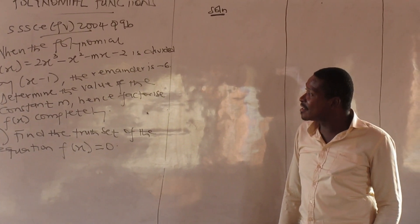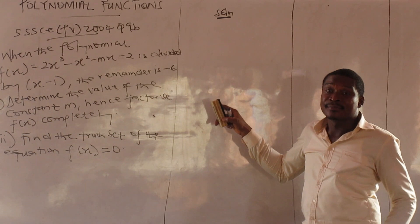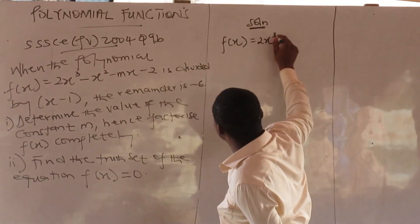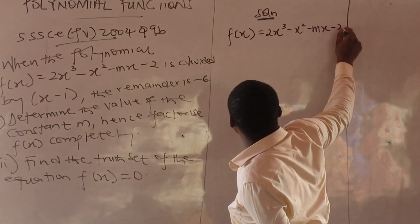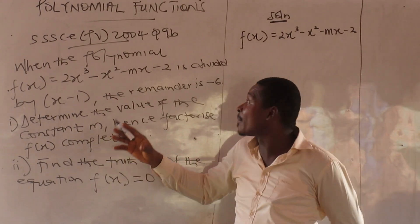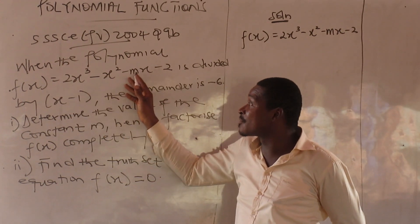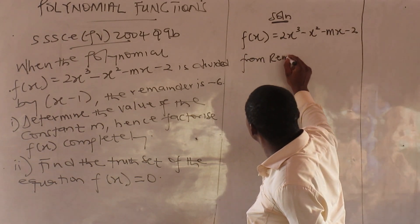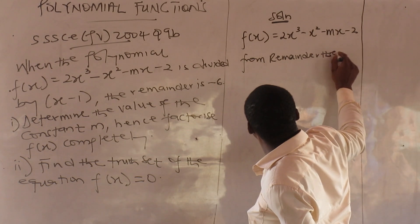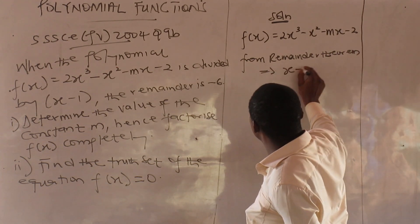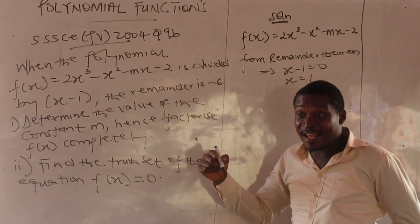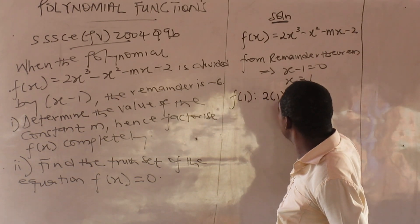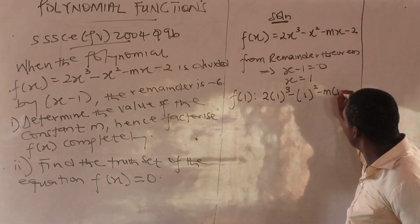Now, when the polynomial f(x) is divided by (x minus 1), the remainder is minus 6. That is our polynomial. So using the remainder theorem, it follows that x minus 1 equals zero, meaning x equals 1. So now substituting f(1) into the function: f(1) equals 2(1) cubed plus m(1) squared minus 1 minus...